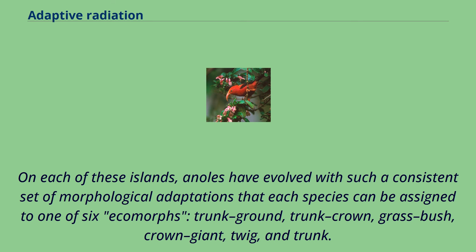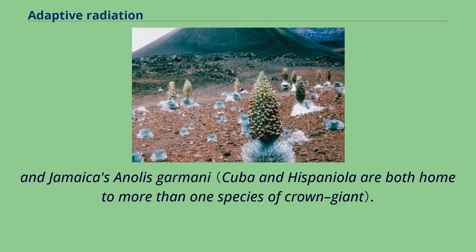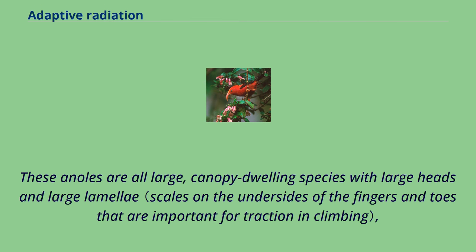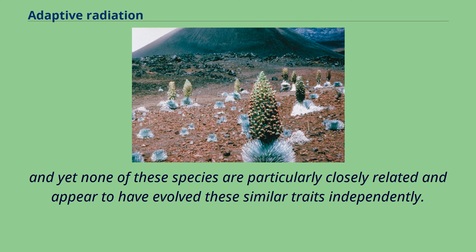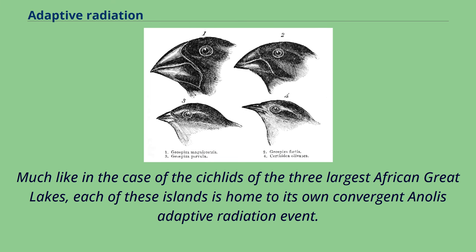Take, for example, crown-giants from each of these islands: the Cuban Anolis luteogularis, Hispaniola's Anolis ricordii, Puerto Rico's Anolis cuvieri, and Jamaica's Anolis garmani. These anoles are all large, canopy-dwelling species with large heads and large lamellae, and yet none of these species are particularly closely related and appear to have evolved these similar traits independently. The same can be said of the other five ecomorphs across the Caribbean's four largest islands. Much like the cichlids of the three largest African Great Lakes, each of these islands is home to its own convergent anolis adaptive radiation event.